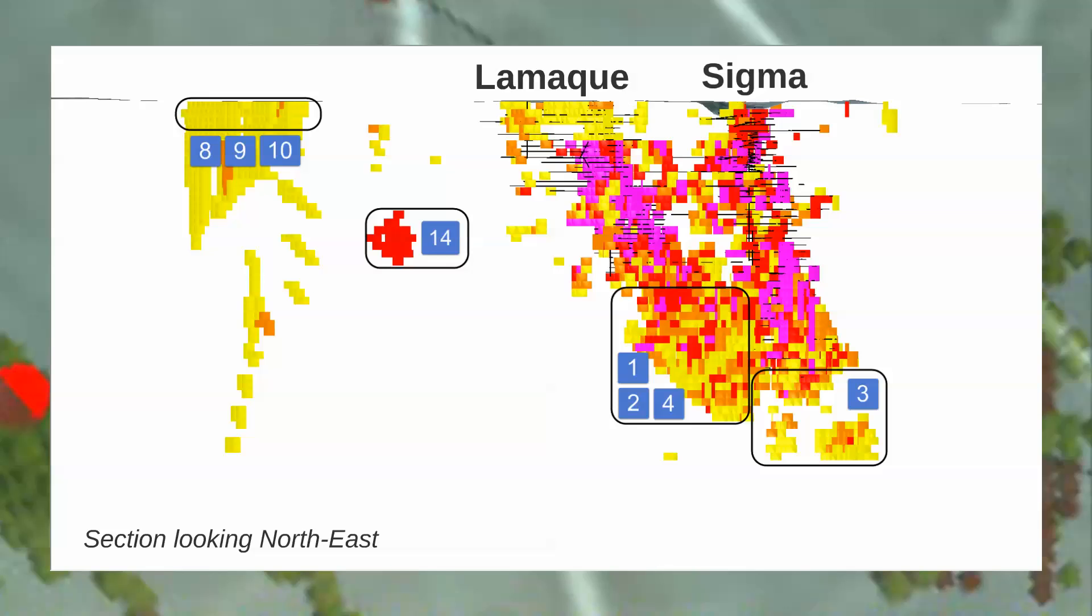Remember, the hotter the color, the better the score. This section shows the excellent correspondence of very high scores over the Lamaque and Sigma deposits, as well as some of the target types that we identified.